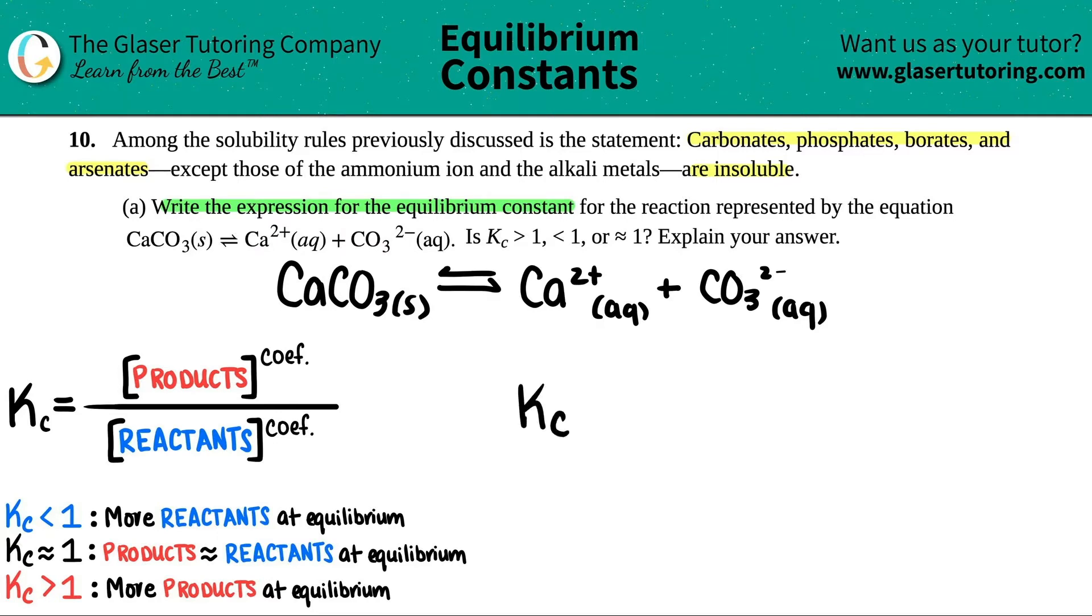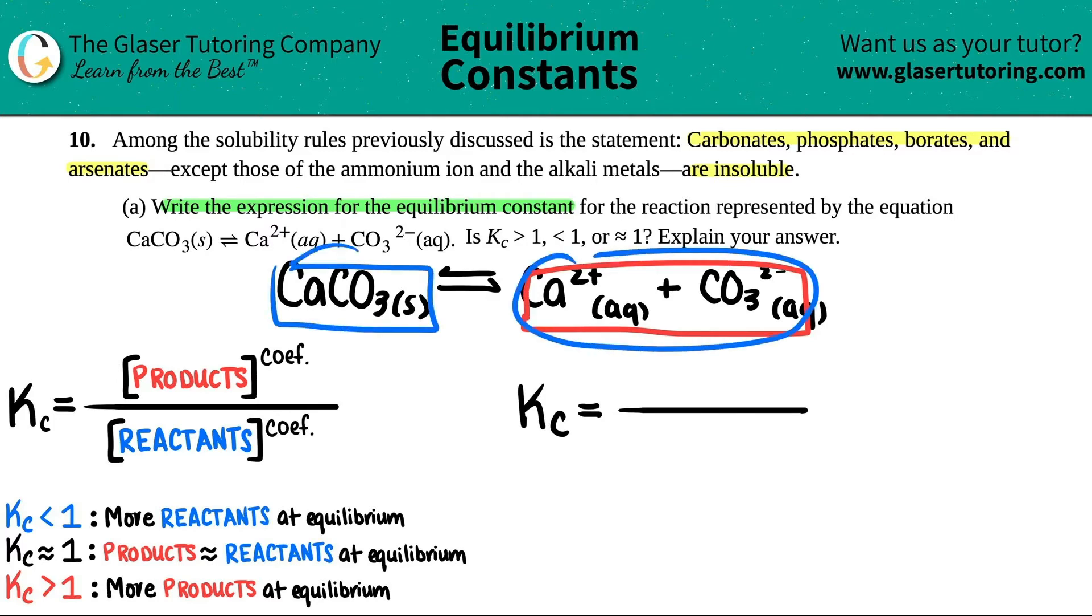Kc is going to equal something divided by something else. And we always look at the products and then the reactants. In this case, these are your products, right? And these are your reactants. So it looks like it's going to be just talking about these divided by this.